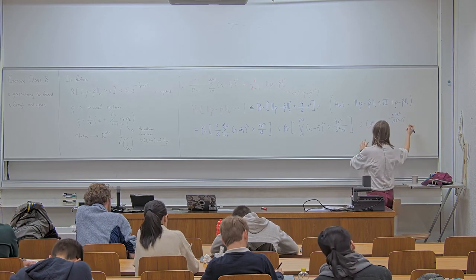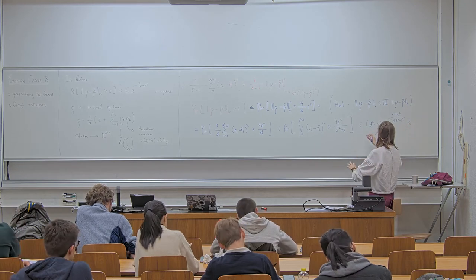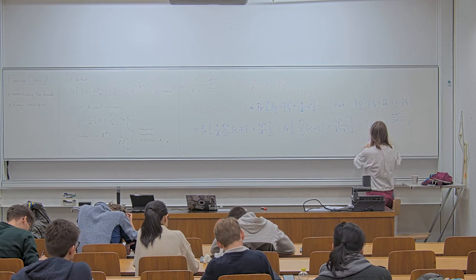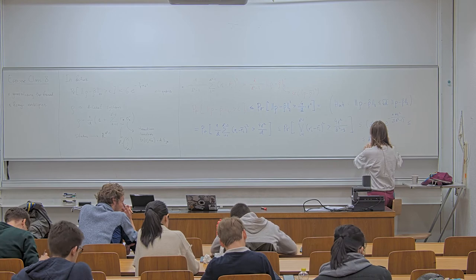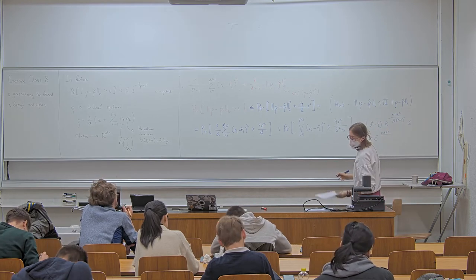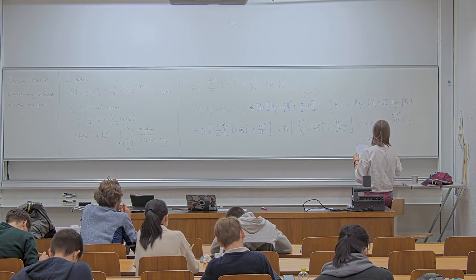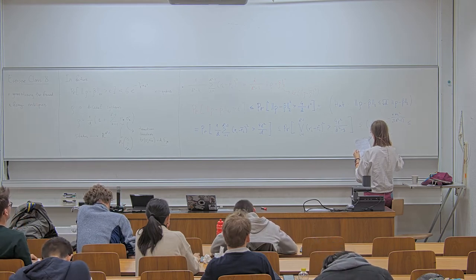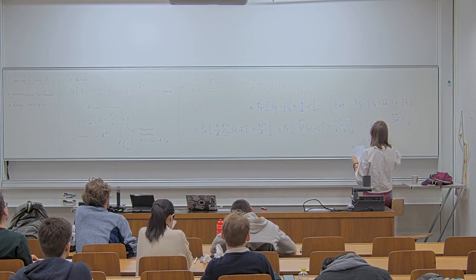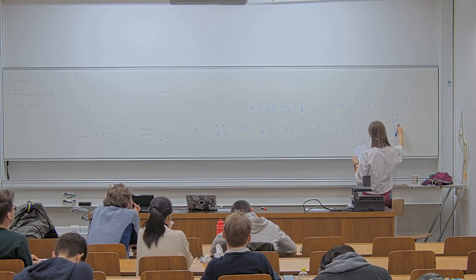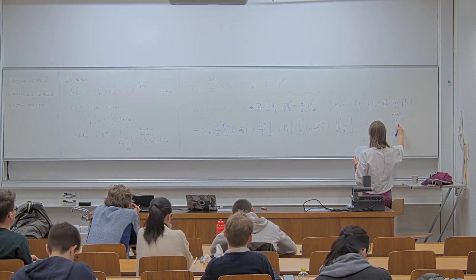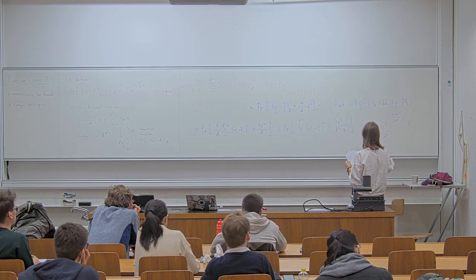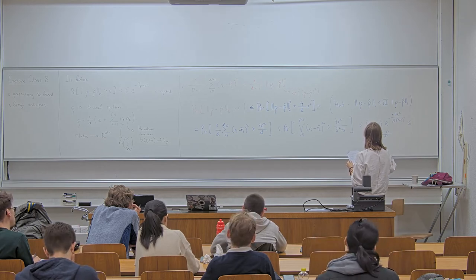Disregarding the minus-one, we get d² times e to the power minus n·d·epsilon² over 2d². Let's call this eta.